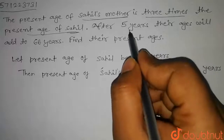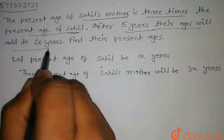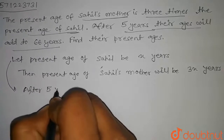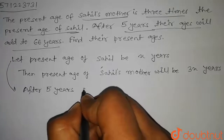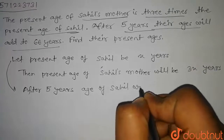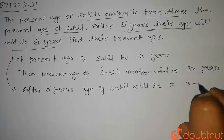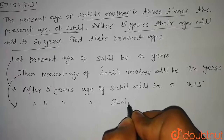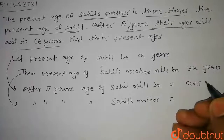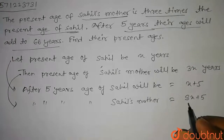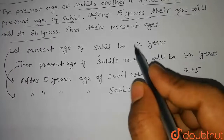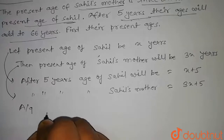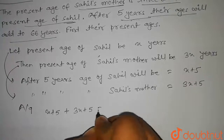Now, according to the question, it is given that after 5 years their ages will add to 66 years. After 5 years, the age of Sahil will be equal to x plus 5. Similarly, after 5 years, the age of Sahil's mother will be equal to 3x plus 5. Since their ages add to 66, we can write: x plus 5 plus 3x plus 5 is equal to 66.